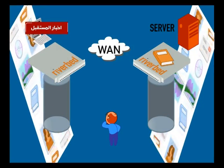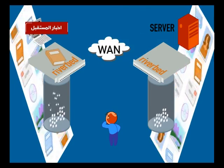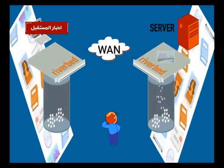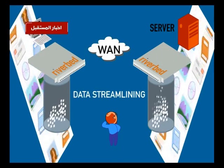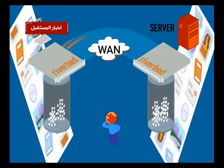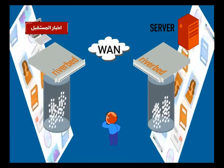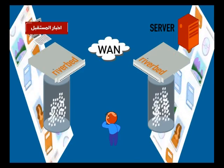The bank wants to have a number of branches, for example in Lebanon or other countries. These branches connect back to the head office through an internet service provider. The problem is that there isn't enough speed for applications to perform well — users don't feel like they're working directly with the head office. That's why we need a device called Riverbed.